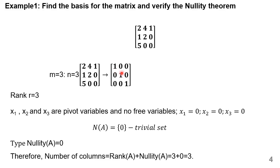There are no free variables. Therefore, when we solve these equations, we get x1 = 0, x2 = 0, x3 = 0. So the null set is a trivial set containing only the zero vector [0, 0, 0]. Therefore, the Nullity(A) = 0. By the Nullity theorem, the number of columns equals Rank(A) plus Nullity(A) = 3 + 0 = 3. Thus, the nullity theorem is verified.